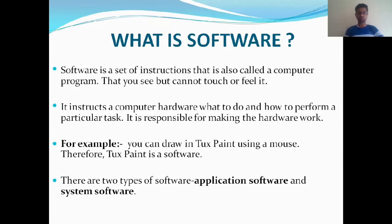Hardware and software both depend on each other — without software, hardware does not work, and without hardware, software does not work. For example, you can draw in a paint application using a mouse. Without the mouse you cannot draw anything, so the paint application is software and the mouse is hardware. You can use the software but you cannot touch it.